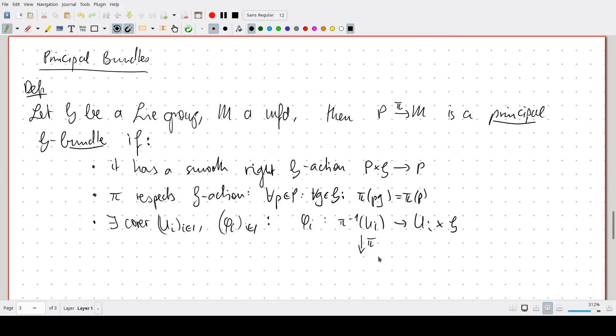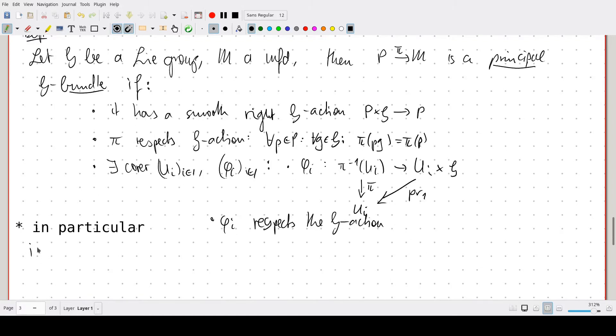Such that firstly this diagram commutes, meaning that this is really just the coordinate in the base manifold, and such that phi i respects the G action. In other words, G acts freely on P, and the orbits are precisely the fibers of pi.